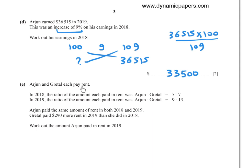Part (e): Arjun and Grittle each pay rent. In 2018, the ratio Arjun to Grittle was 5:7. In 2019, the ratio was 9:13. Arjun paid the same amount of rent in both years. Grittle paid $290 more rent in 2019 than in 2018. Work out the amount Arjun paid in rent in 2019.